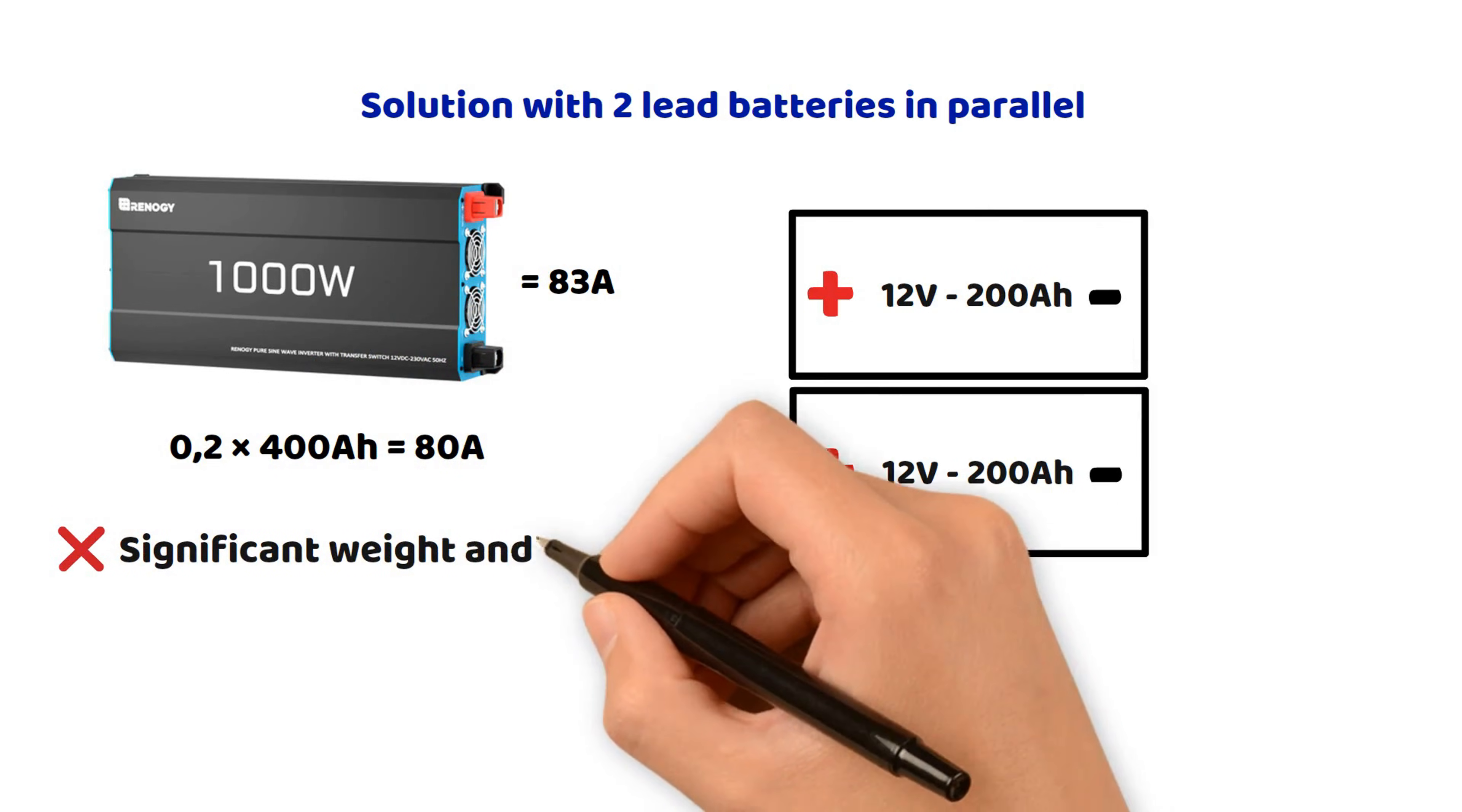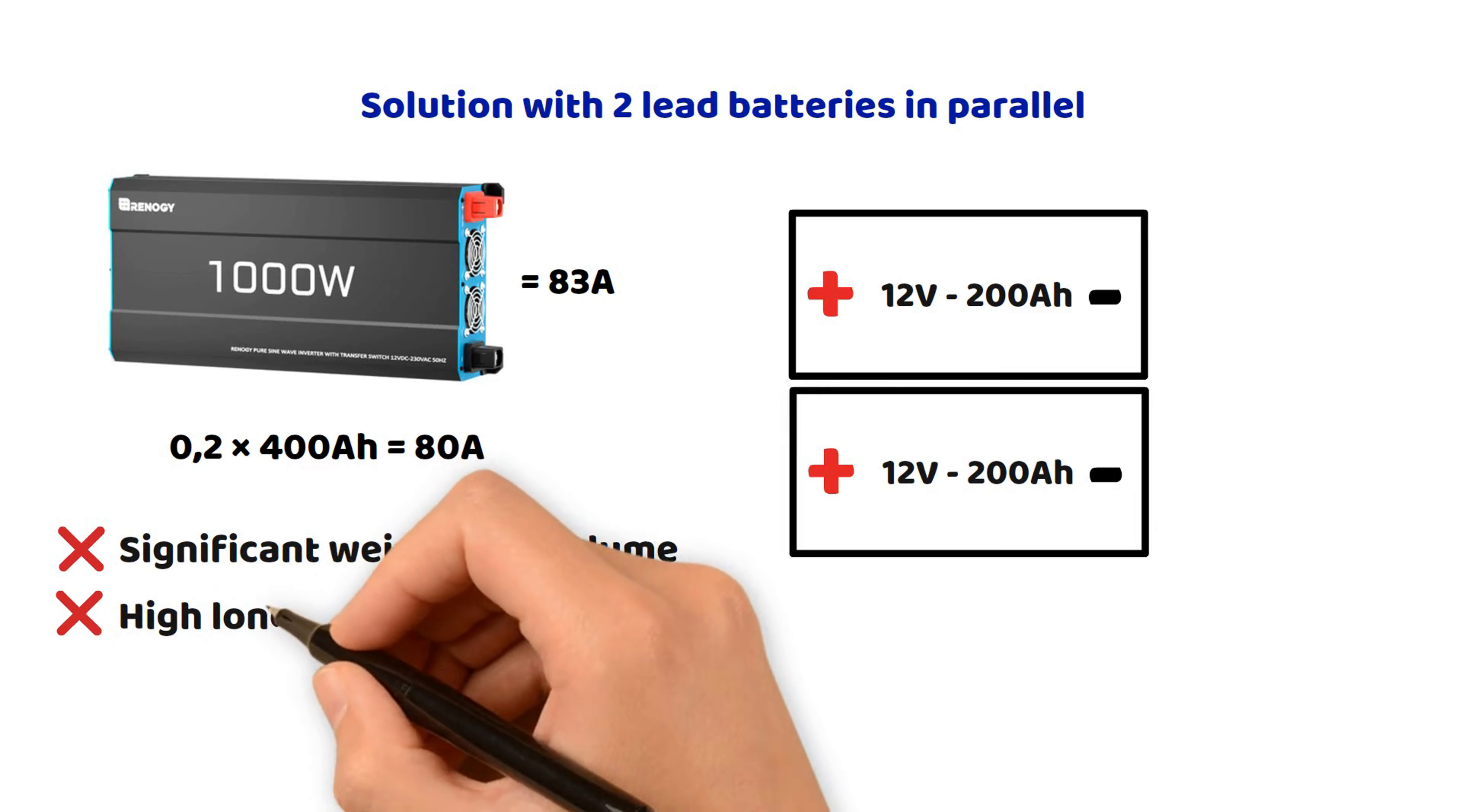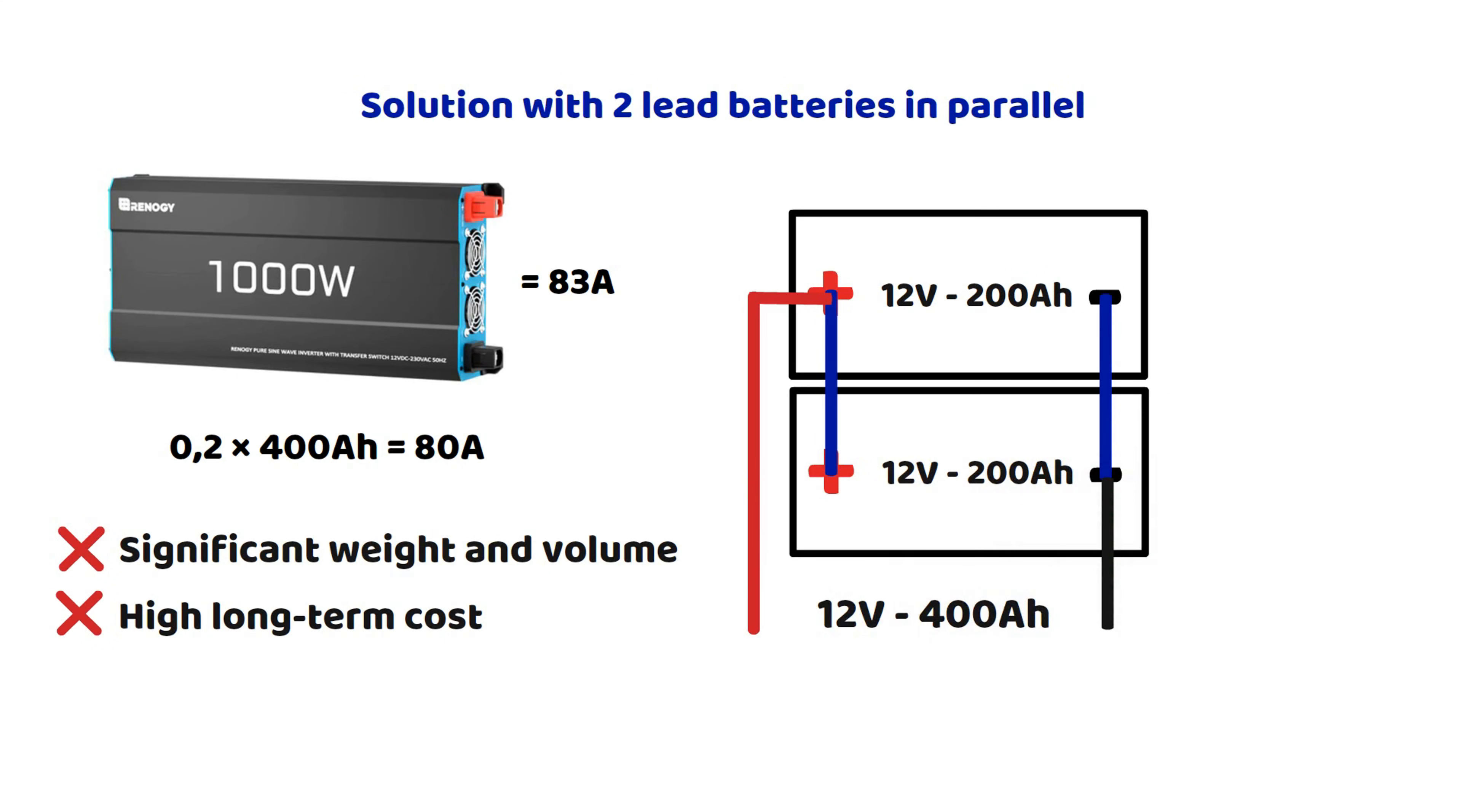And even if we respect the low recommended charge and discharge currents for a lead acid battery, we must not forget that the depth of discharge, DOD, also plays a crucial role in lifespan. In fact, the more the discharge is limited, the greater the number of cycles.